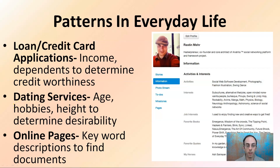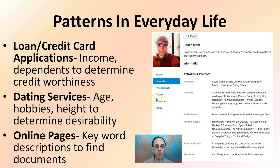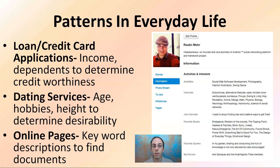Patterns in everyday life — how do they relate? Loan and credit card applications use income dependence to determine whether someone is worthy of getting that credit. That's a pattern — how are they behaving over time? Dating services use age, hobbies, and height to determine desirability. That's another pattern. And online pages, when we keyword search descriptions to find documents, that's looking for a pattern in a particular document or text block.